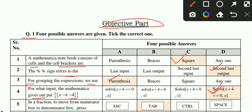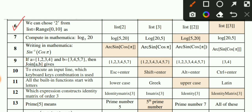MCQ number 5: To move from the numerator box to the denominator box, press Tab. Moving using Tab is the correct option. MCQ number 6: To choose two elements from a list equal to the closed interval [0,10], option D is correct. MCQ number 7: To compute in Mathematica log of 20 with base 5, option C is correct - Log[20,5].